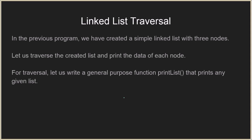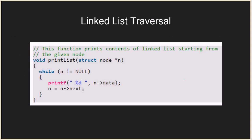In the previous program we created a simple linked list with three nodes. Now in this next example we are going to traverse that linked list and print the data of each node. The function we are going to write is the printList function. It takes as an argument a pointer to a node. Since we want to print the whole linked list, we pass the head — the pointer to the first element — as the argument to printList.